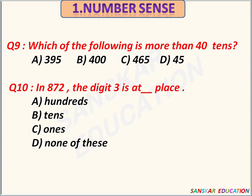Which of the following is more than 40 tens? Options are 395, 400, 465, 45. 465 is more than 40 tens. Option C is the correct answer.